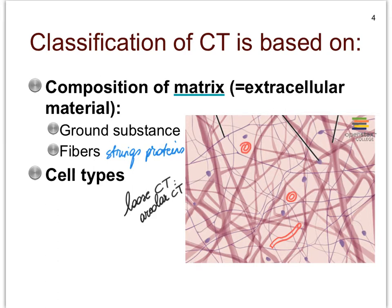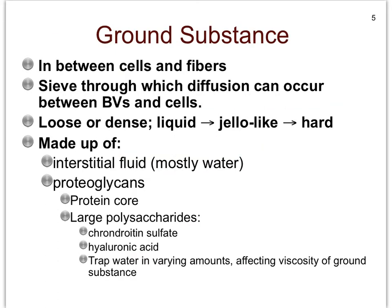We're not going to go into any great detail about the chemistry or biochemistry of the ground substance. We'll just say a few things, and we will go in more depth on the fibers, then take a look at what kinds of cells we often find in the connective tissues. The ground substance is all the stuff you find in between the cells and the fibers, and it can be a very liquidy ground substance, to more jello-like as we see in the cartilages, versus very hard as we see in bone tissue.